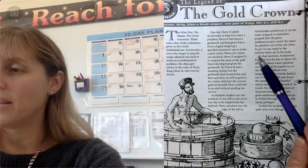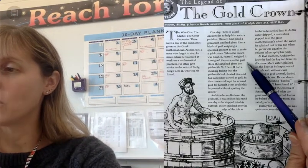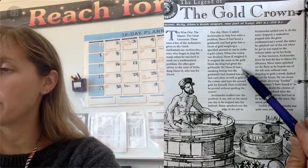When the crown was finished, Hero II weighed it. It weighed the same as the gold block the king had given the goldsmith. Yet Hero had a sneaking feeling that the goldsmith had cheated him.